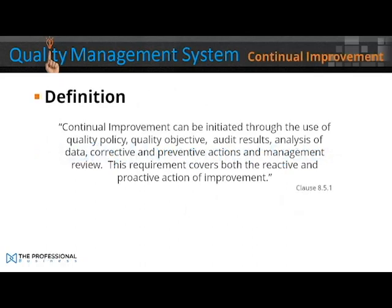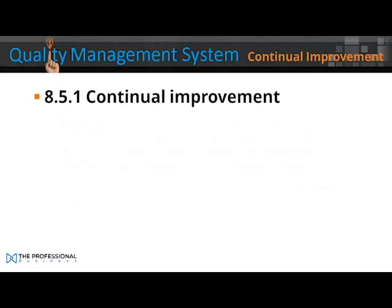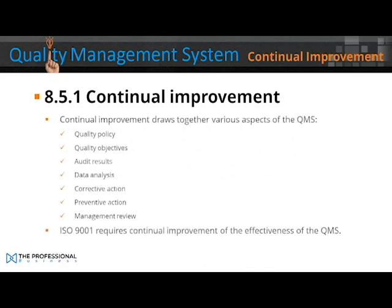Continual improvement can be initiated through the use of quality policy, quality objectives, audit results, analysis of data, corrective and preventative actions, and management review. The requirements cover both the reactive and proactive actions of improvement. The ISO 9001 requires continual improvement of the effectiveness of the QMS — clause 8.5.1. Continual improvement draws together various aspects of the QMS: quality policy, quality objectives, audit results, data analysis, corrective actions, preventative actions, and management review.